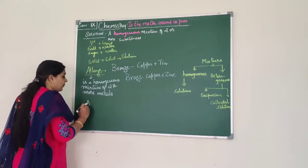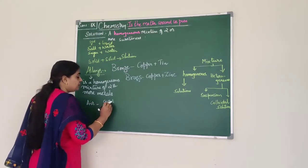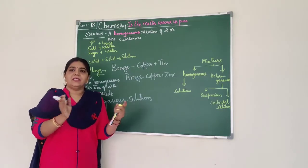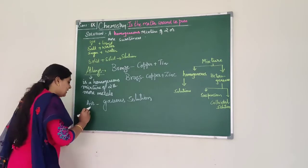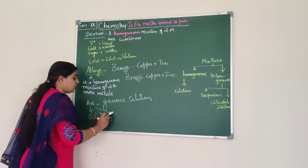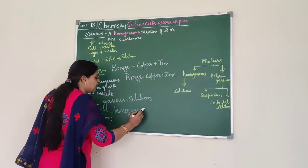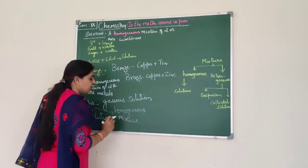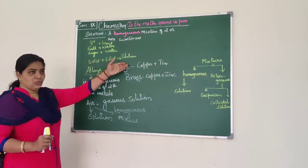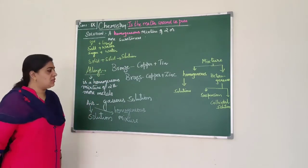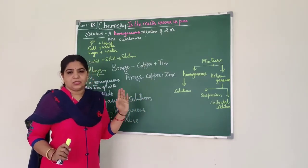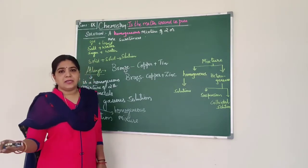We also have air, which is a gaseous solution — a gaseous mixture. One particular gas dissolves in another gas. So air is an example of a solution; it is a homogeneous mixture. Air consists of different gases dissolved together. So remove from your mind that always a solid has to be dissolved in a liquid for it to be a solution — it can be solid dissolving in solid or gas dissolved in gas.